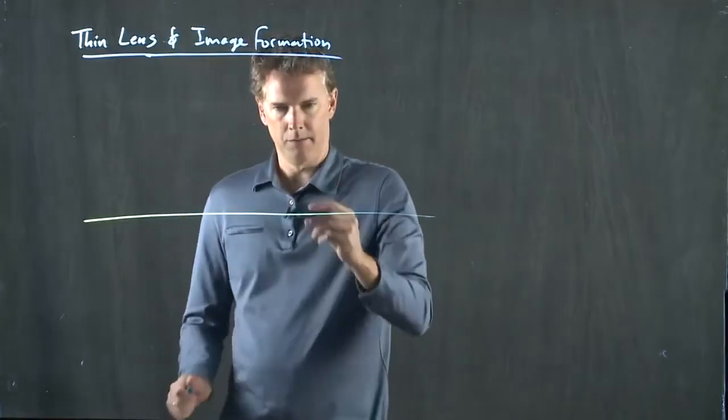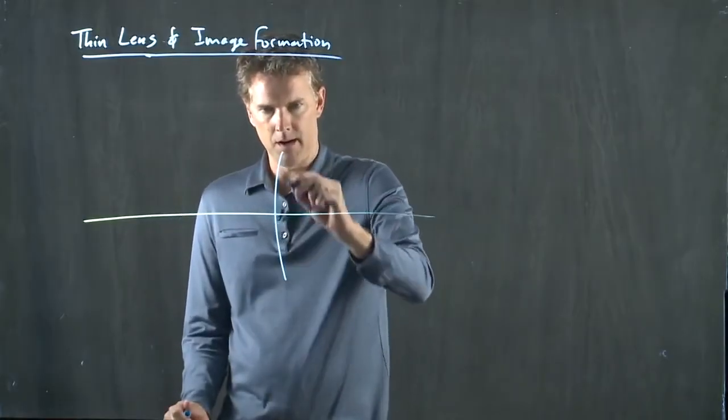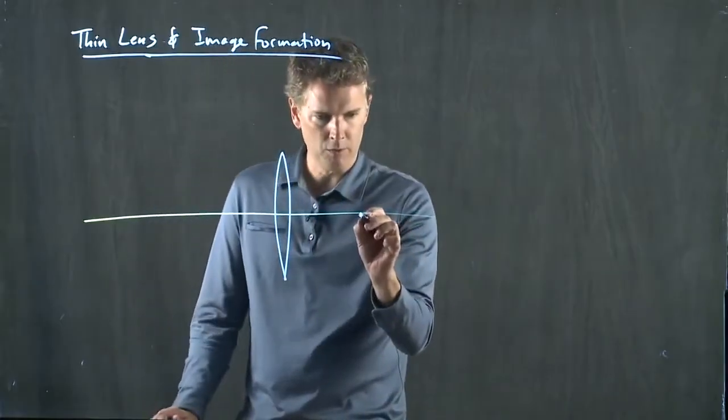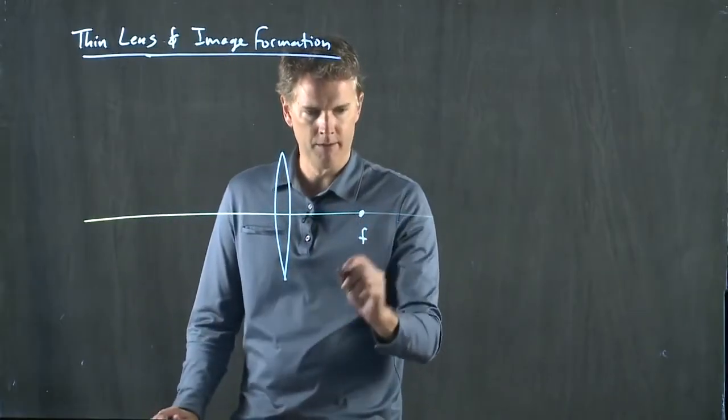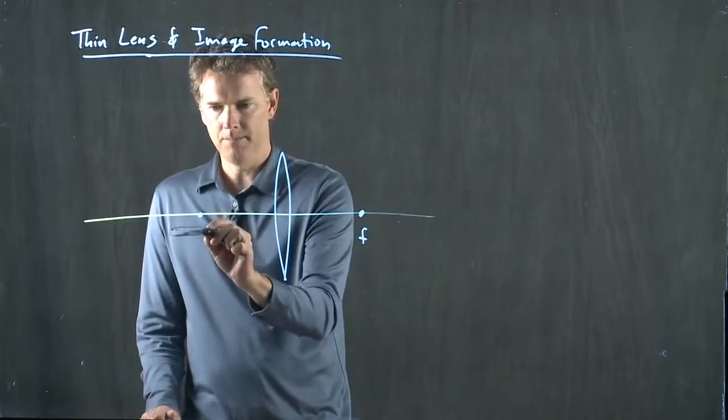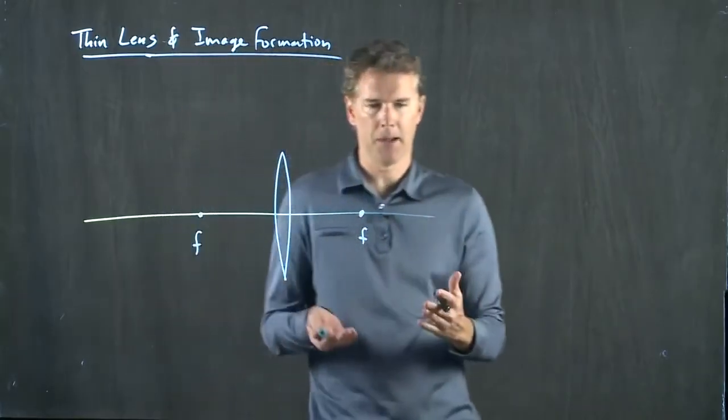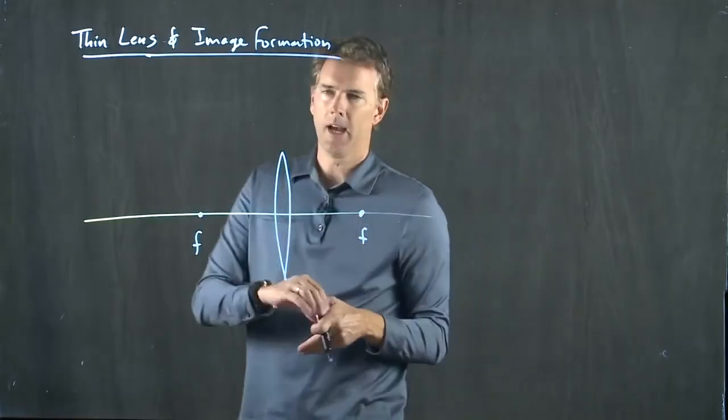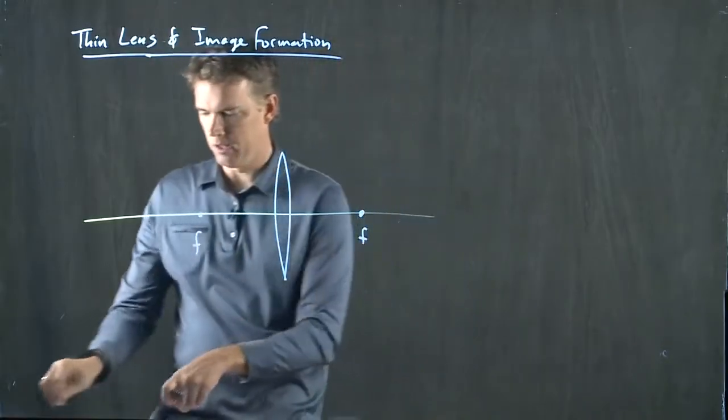Here's our optic axis. Let's put our thin lens right here. And that thin lens has a focal position, F, on either side and it's symmetric. If it's a symmetric lens then you have symmetric focal positions and this is part of being thin lens.